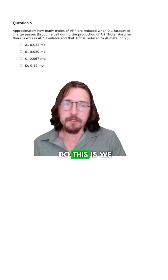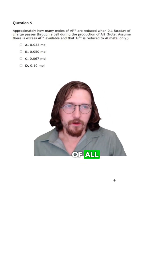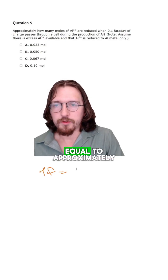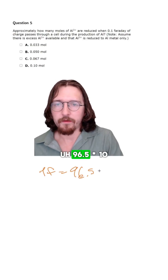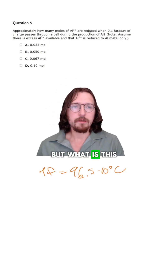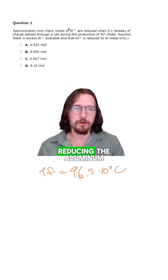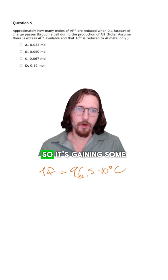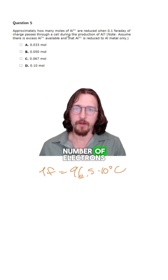The way we do this is we have to recognize, first of all, that 1 farad is equal to approximately 96.5 times 10 to the 3rd coulombs of charge. But what is this charge that is actually reducing the aluminum? Well, to reduce aluminum, it has to gain electrons.